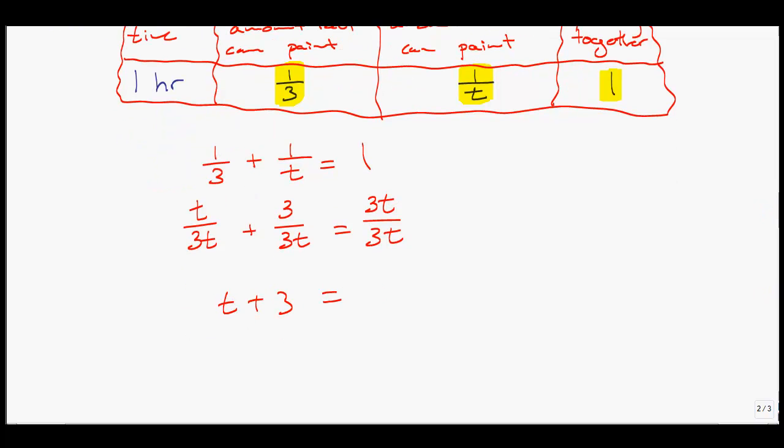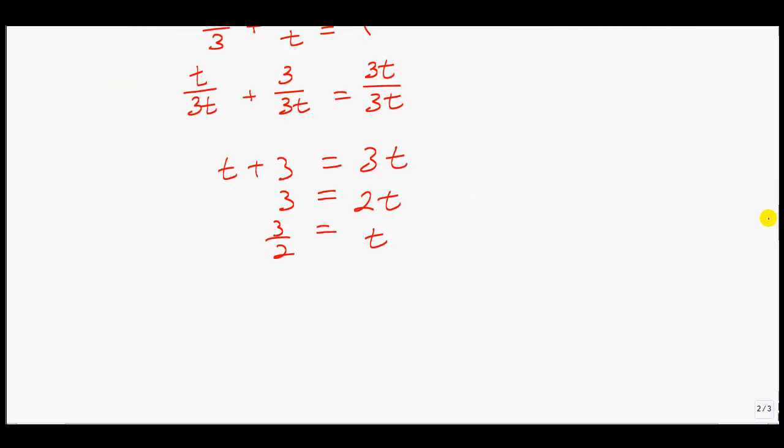Getting rid of the denominator now, we have t plus 3 equals 3t. Gathering like terms, I'll move the t to the right-hand side, giving 2t equals 3, or t equals 3 over 2. That means it would take Graham, since t equals 1.5, 1.5 hours or 1 hour 30 minutes to paint the garage door on his own.